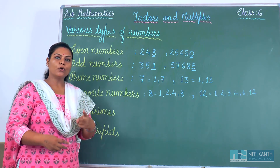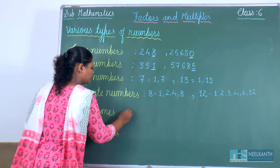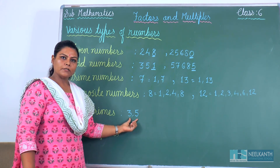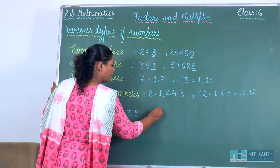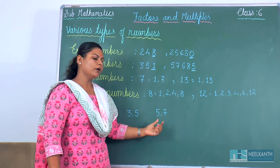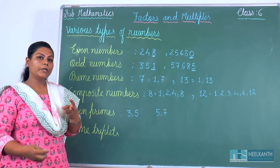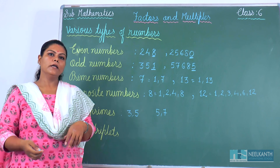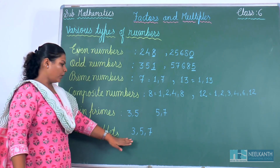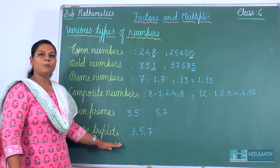Now what are twin prime numbers? Two consecutive odd prime numbers are called twin prime numbers. For example, 3 and 5 — these two numbers are both odd and prime, so they are called twin primes. Another example: 5 and 7 — both are odd and prime numbers, so this is also called twin primes. And what are prime triplets? Three consecutive odd and prime numbers are called prime triplets. For example, 3, 5 and 7 — all three numbers are odd as well as prime, so these numbers are called prime triplets.